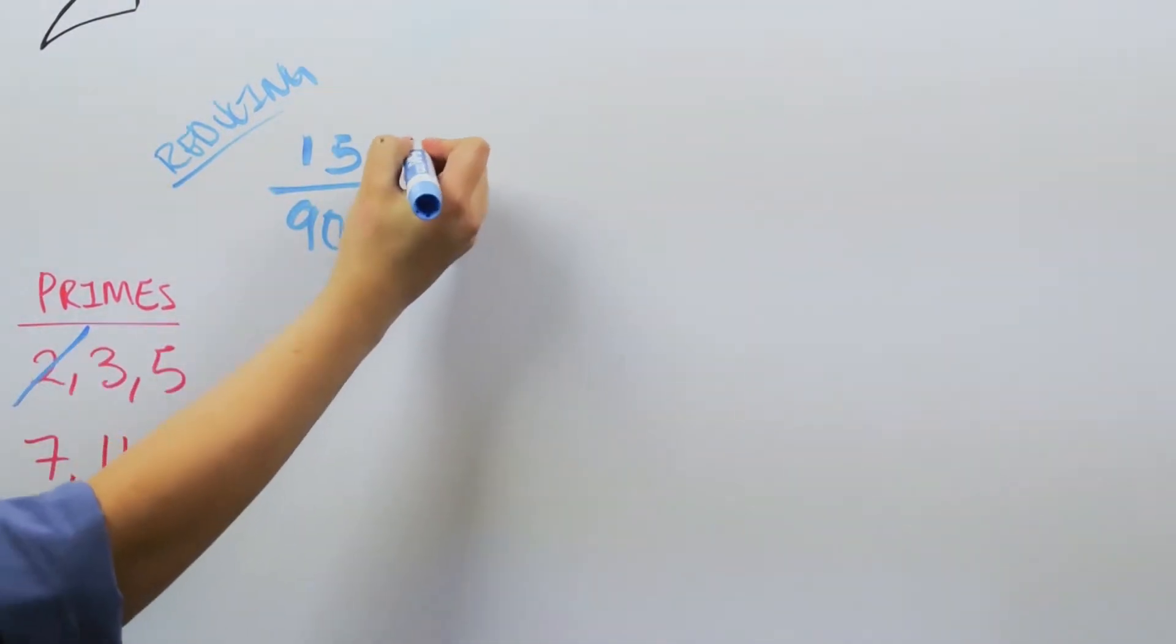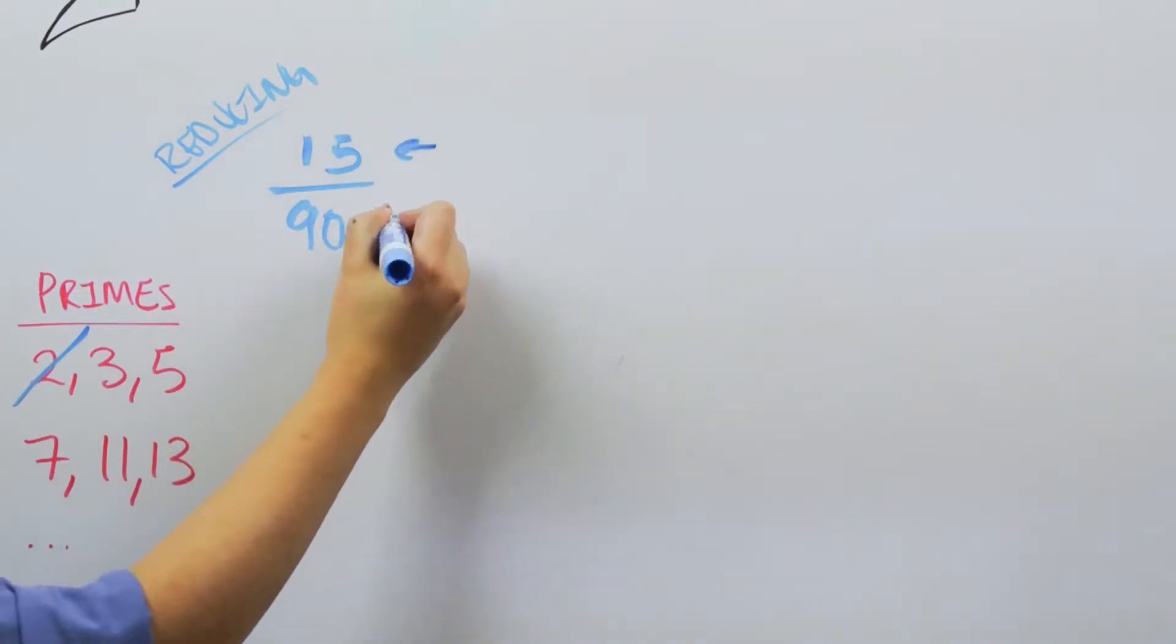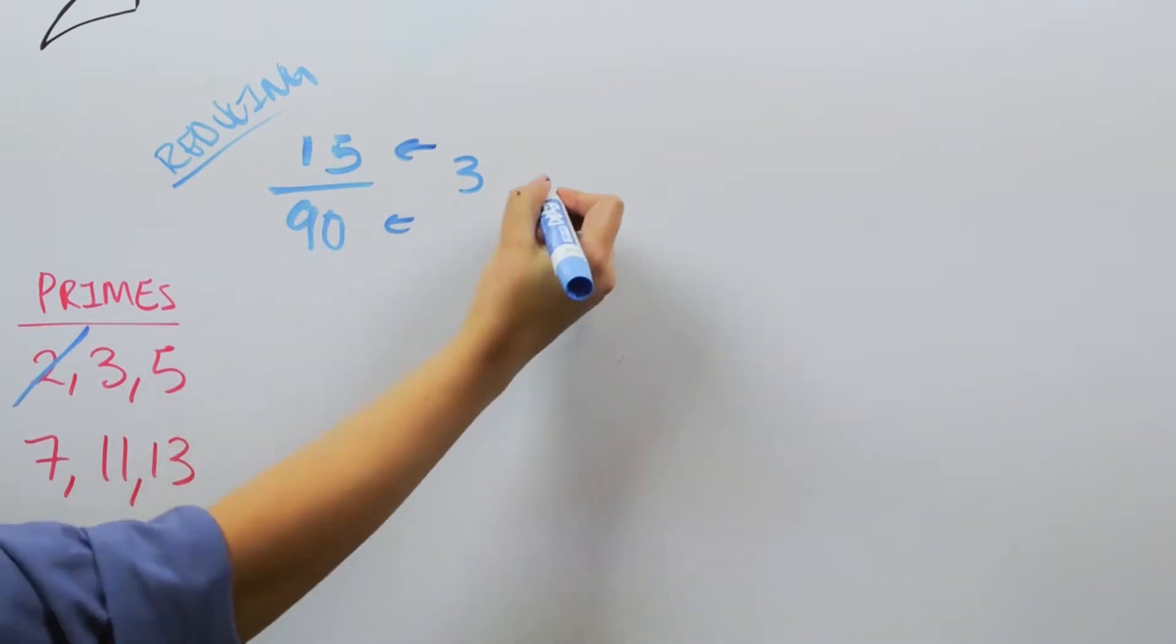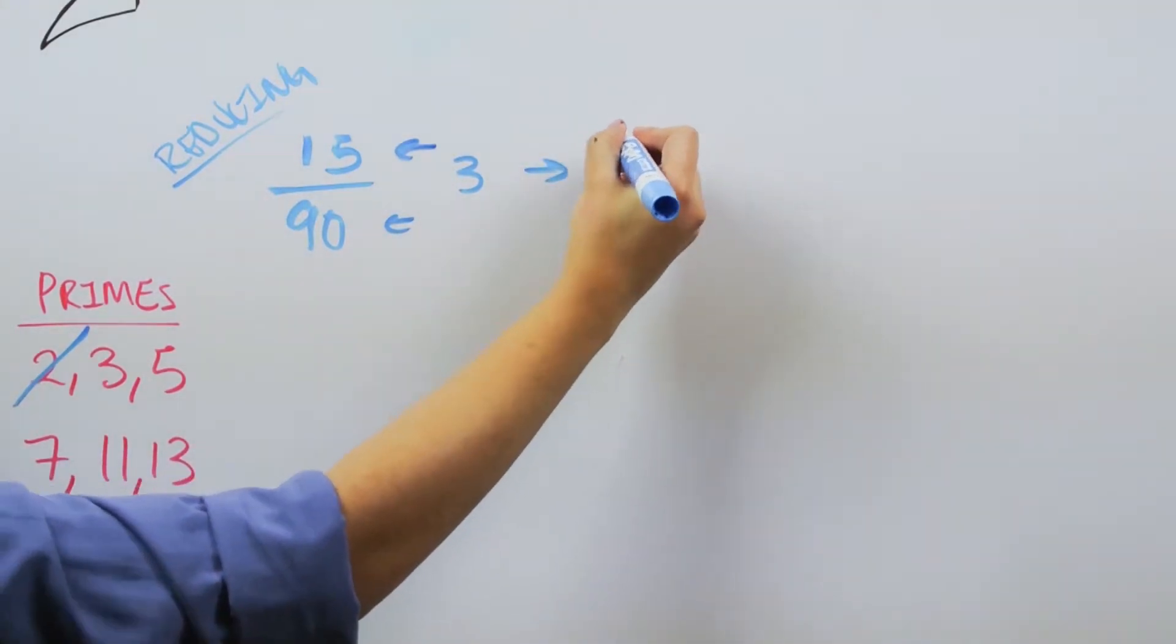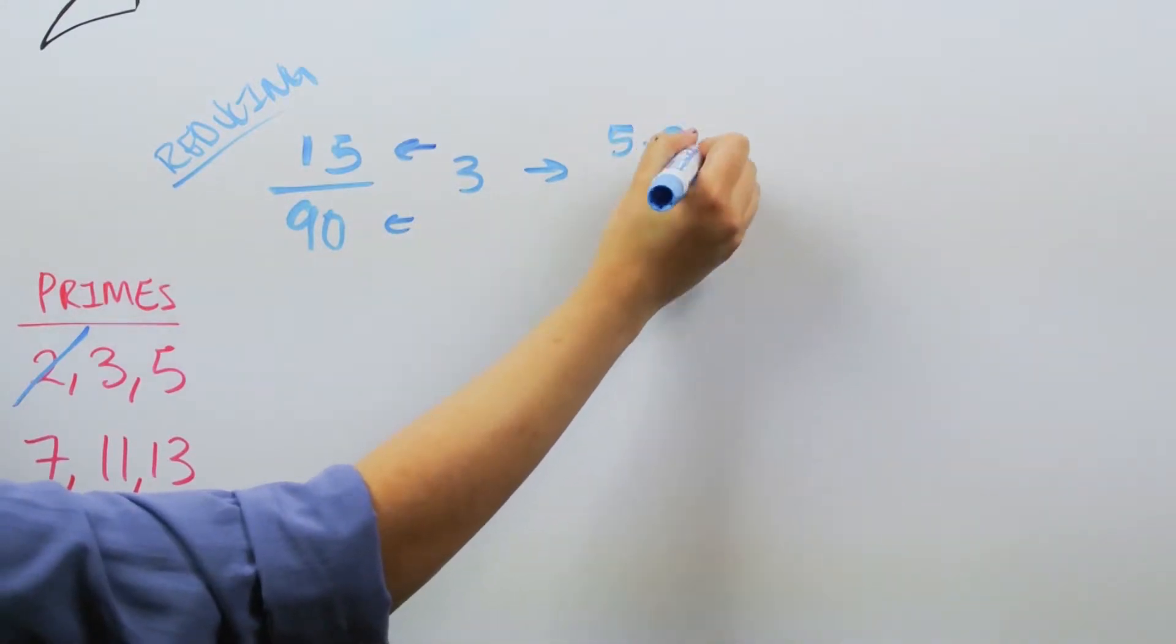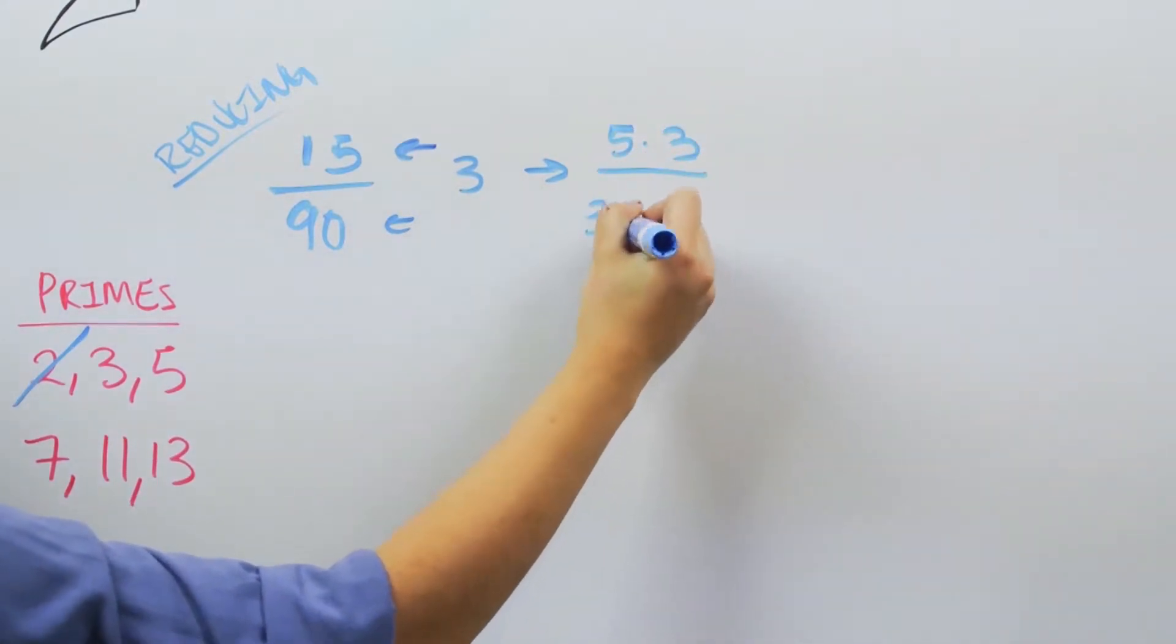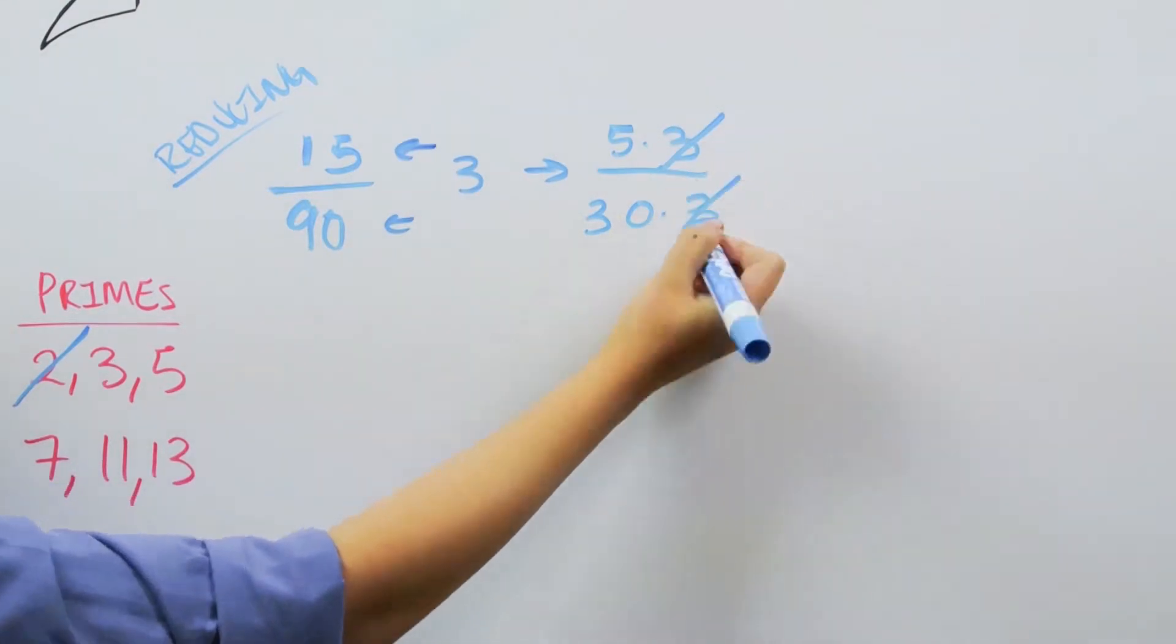And 3 is a factor of both 15 and 90. So we can pull out a 3, which leaves us with 5/30. And then these cancel.